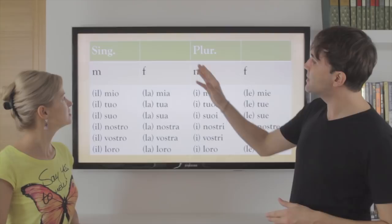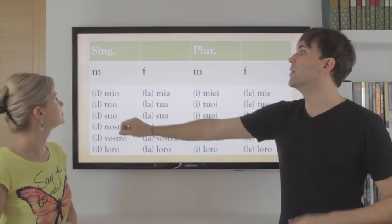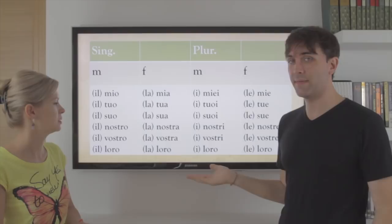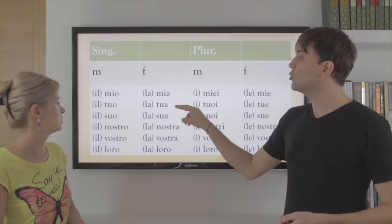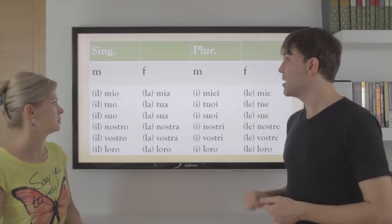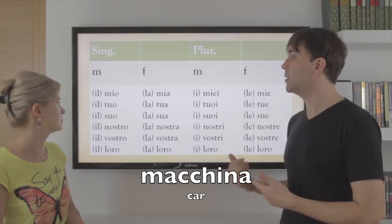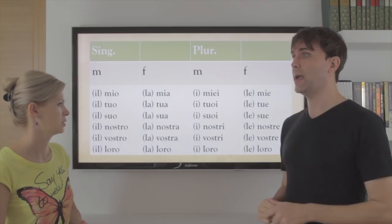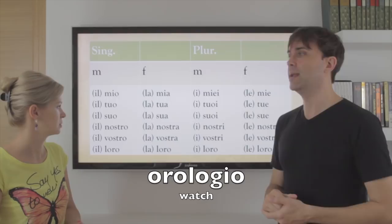Let's take a look first at singular and then the plural. Masculine: il mio, la mia. Il mio bambino, la mia bambina — perfetto. Il tuo, la tua. Il tuo ombrello, la tua macchina — your umbrella, your car. Il suo, la sua. Il suo orologio, la sua penna.